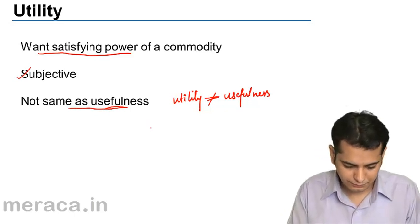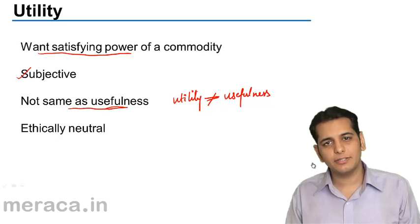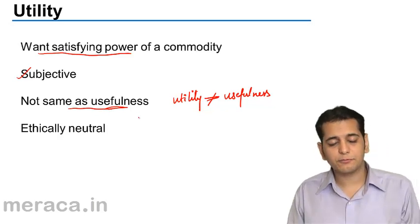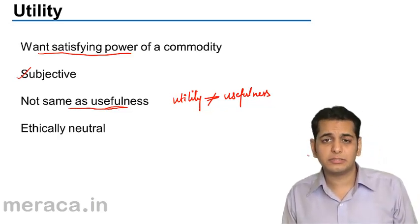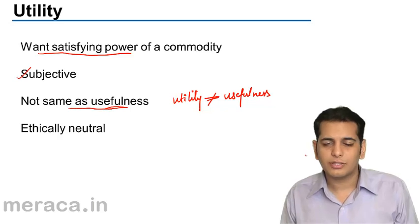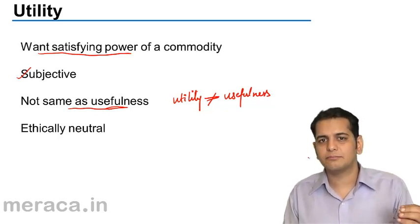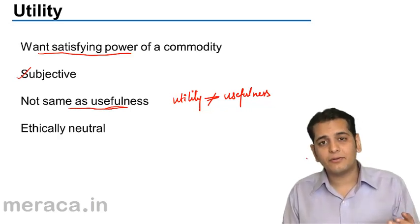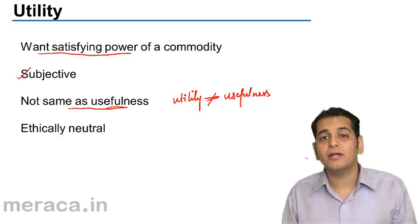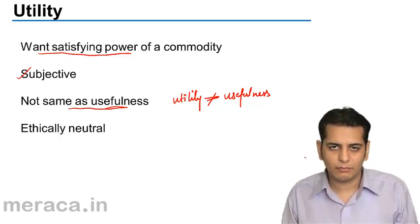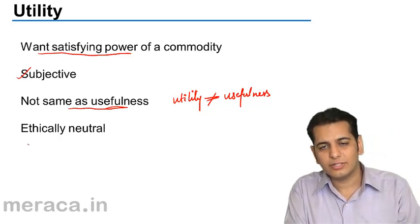Utility is ethically neutral. As already explained, utility is not the same as usefulness — for example, cigarettes, liquor, and drugs. Having drugs may not be ethical; it may be unethical. But in economics, since a cigarette or a drug has utility, we can measure the utility of drugs and cigarettes.